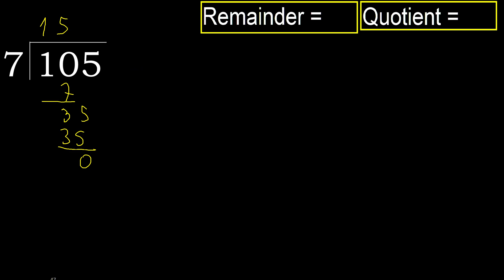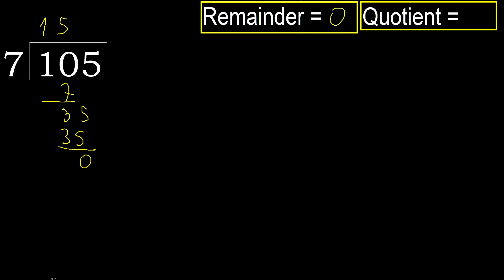Therefore, finish. 105 divided by 7 equals 15.